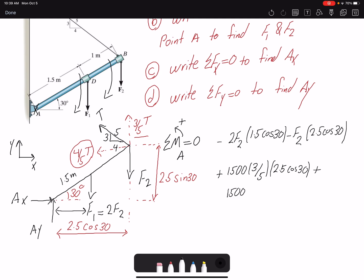Plus 1500 times 4/5, the horizontal component or the component along x, and 2.5 sine 30 would be the moment arm equals zero.